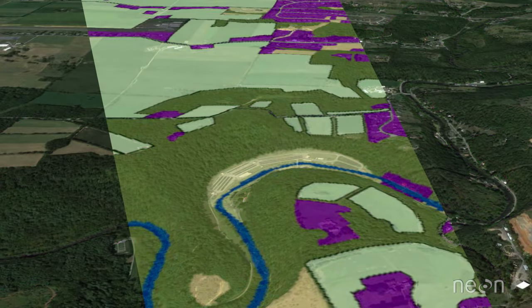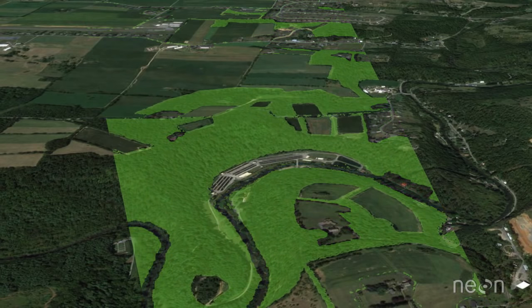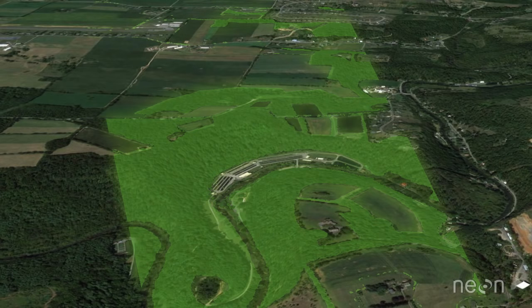We then use those measurements to classify what's on the ground. For example, pixels that have a spectral signature with a lot of near-infrared light energy are often vegetation.